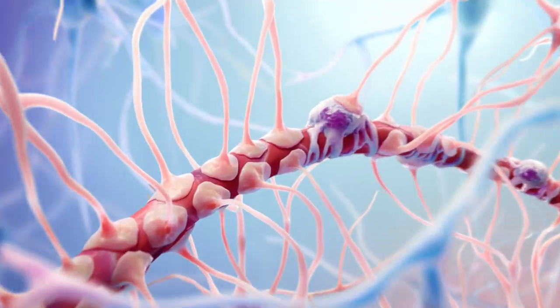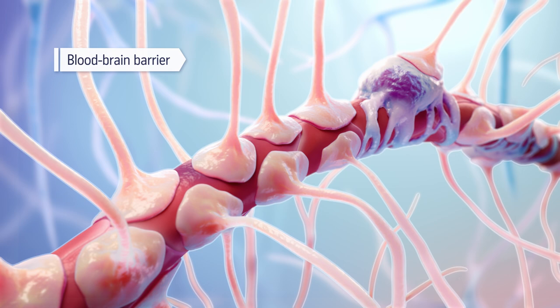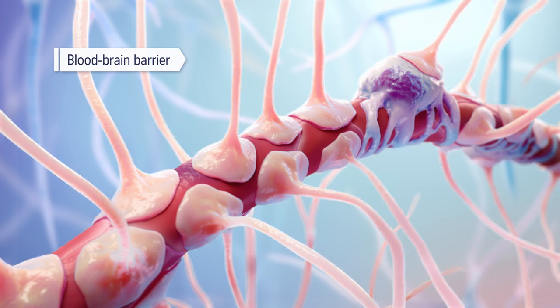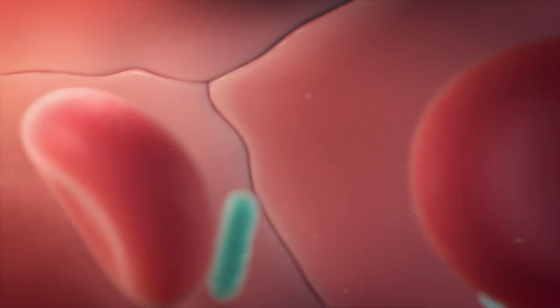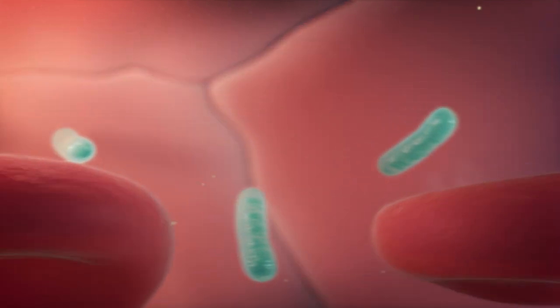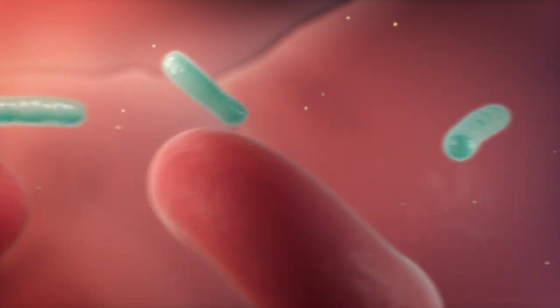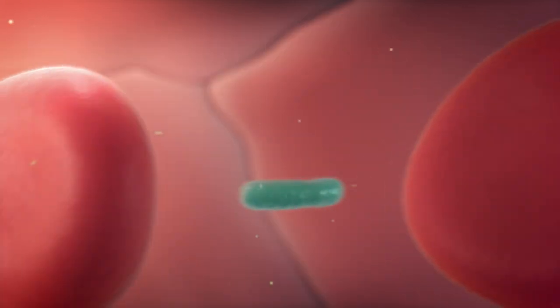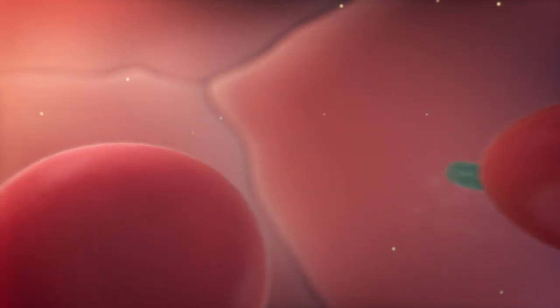In the brain, capillaries are surrounded by the blood-brain barrier, which plays a crucial role in maintaining brain health. The blood-brain barrier is highly selective and prevents pathogens and harmful substances that could be present in the blood from entering the brain while allowing the passage of necessary nutrients.